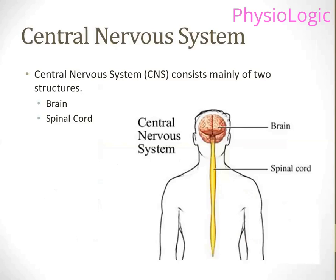What are the parts that make up the central nervous system? There are two main parts: the brain and the spinal cord. You can see in the image that there is the brain, and from the brain the extension is the spinal cord, shown in yellow.